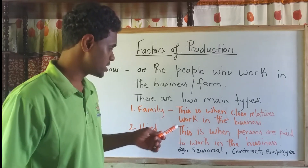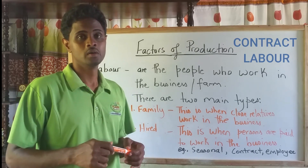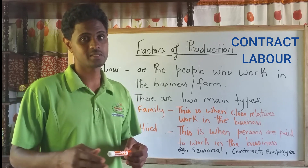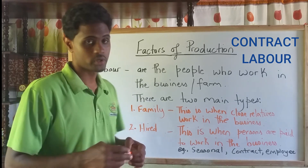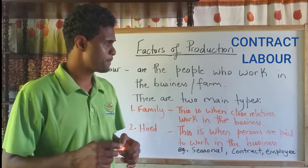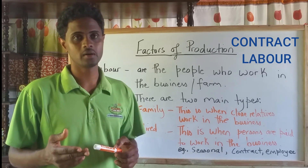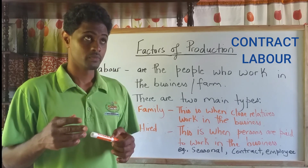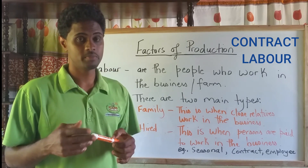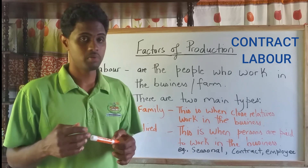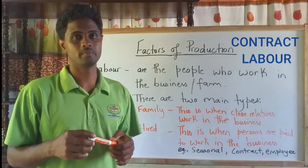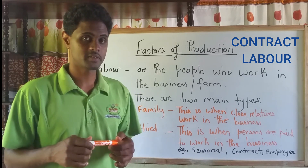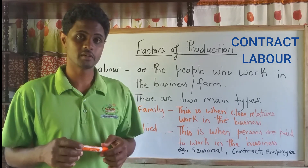Contract labor: the contract laborer is basically a person employed to complete a task, and once that task is completed, that worker will be paid. They also have fewer benefits compared to the employee. For example, a person on contract employed to a business — the employer may not deduct tax from that person, and may also not deduct health care benefit contributions or NHT contributions.